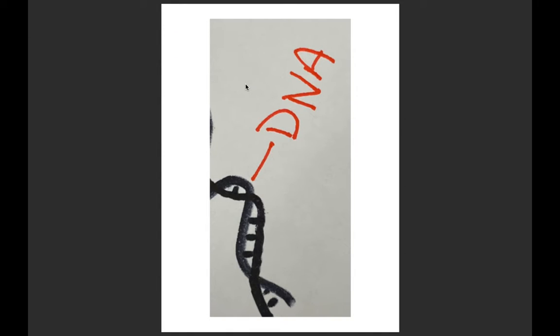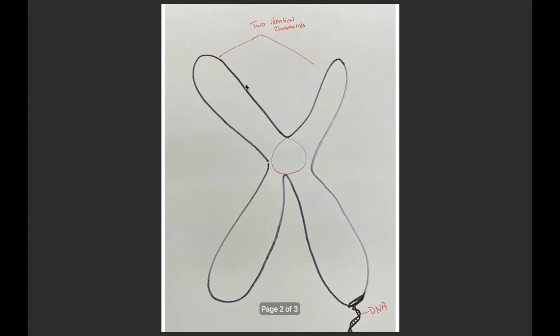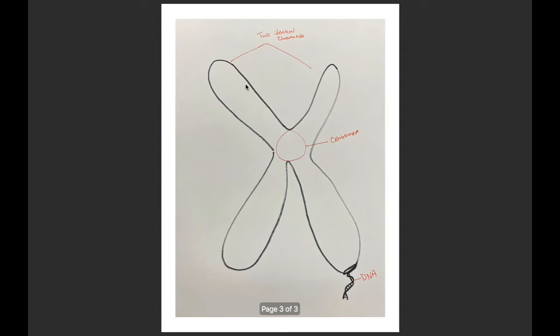So again: you have the DNA strand, it coils around, you end up with two identical chromatids, and in the center holding it all together is the centromere.